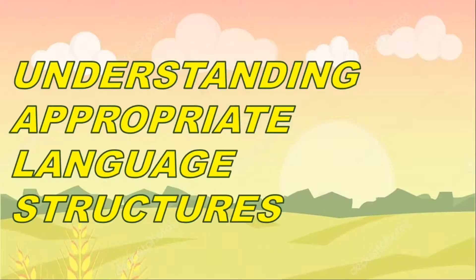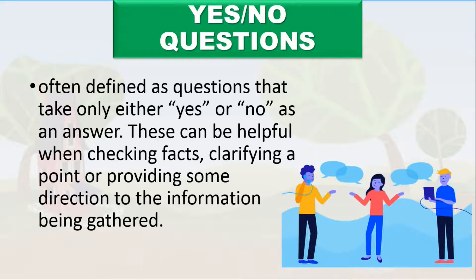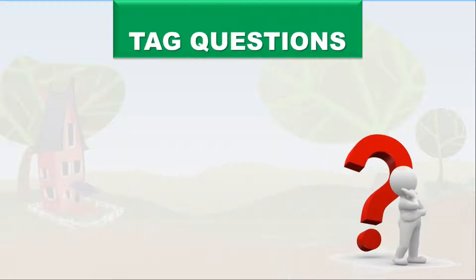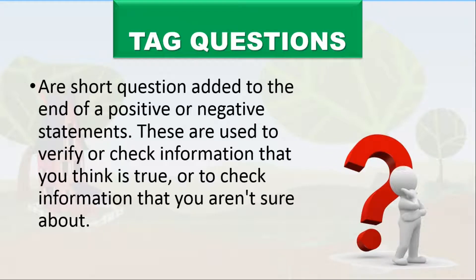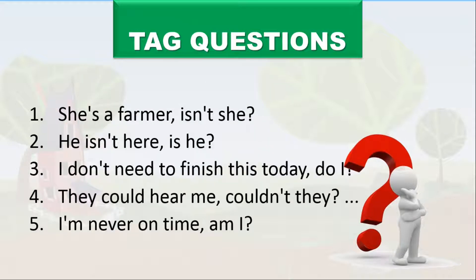Next is understanding appropriate language structures. Yes or no questions are often defined as questions that only take either yes or no as an answer. These can be helpful when checking facts, clarifying a point, or providing direction to the information being gathered. Tag questions are short questions added to the end of a positive or negative statement. These are used to verify information you think is true or to check information you aren't sure about. Examples: 'She's a farmer, isn't she?' 'He isn't here, is he?' 'I don't need to finish this today, do I?' 'They could hear me, couldn't they?' 'I'm never on time, am I?'